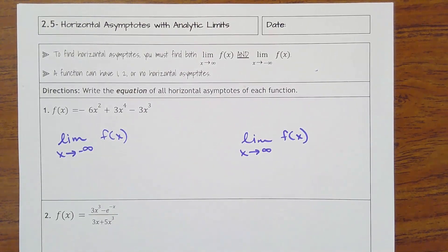2.5 horizontal asymptotes with analytic limits. So we're trying to find horizontal asymptotes, which mean what's happening as x goes to the left and x goes to the right, so that comes back to using limits.